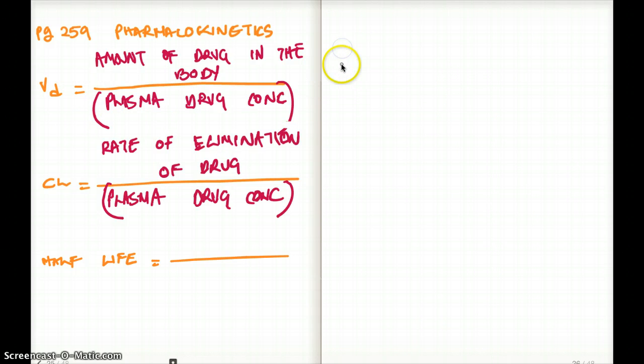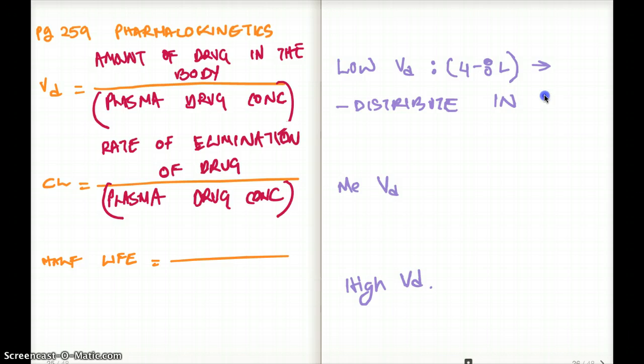The volume distribution can be divided into three tiers. There is the low VD, medium VD, and high VD. The low VD was estimated to be about four to eight liters. These drugs can distribute themselves in the blood. They distribute in blood. They have low VD, so they only distribute in blood. They are also large or charged molecules. They kind of stay where they are. They cannot really go everywhere. Plasma is their boundary. Those drugs are low VD.